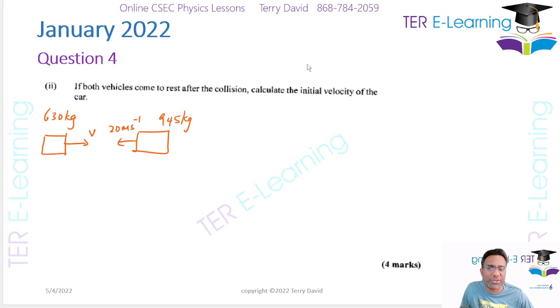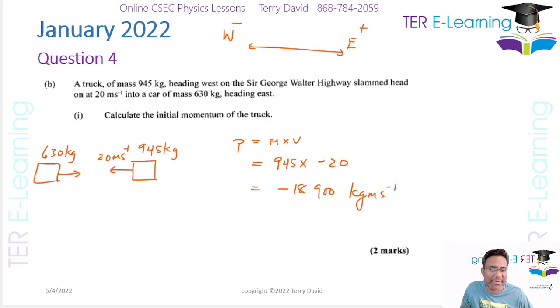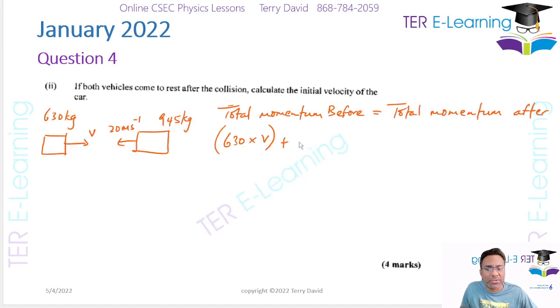We're going to apply the principle of conservation of linear momentum. Your total momentum before is equal to the total momentum after. Your total momentum before: we have 630, this is the car, multiplied by V. We don't know what the velocity of the car is. Plus we need to add the initial momentum of the truck, which we worked out already, so we can put minus 18,900.